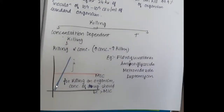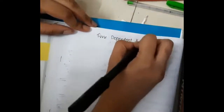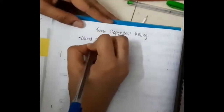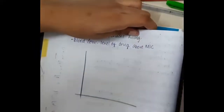Looking at the graph: on the x-axis we have time and on the y-axis we have concentration. The blue graph shows drug concentration slowly increasing with time. When it crosses the minimum inhibitory concentration, only then does the drug act on the bacteria. In time-dependent killing, the duration of blood concentration of the drug should be above the minimum inhibitory concentration — it should always remain above MIC.